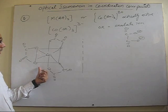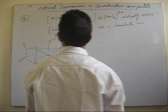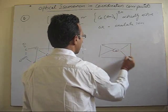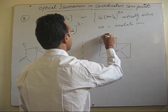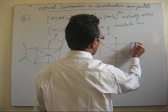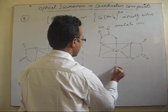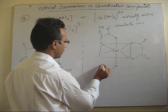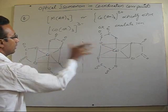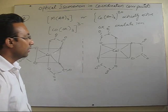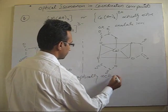This is the one isomer for this particular compound. If we draw its mirror image, we find that it will form non-superimposable mirror images. So once again, just like the previous case, it will also be optically active. You can put this on this and find that they form non-superimposable mirror images, so it will always be optically active.